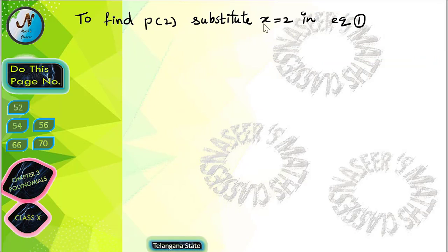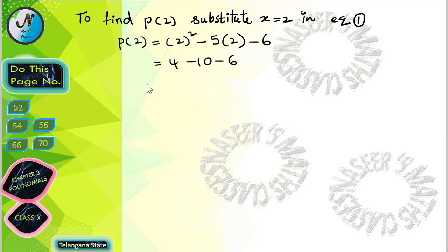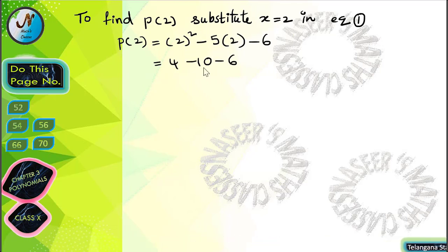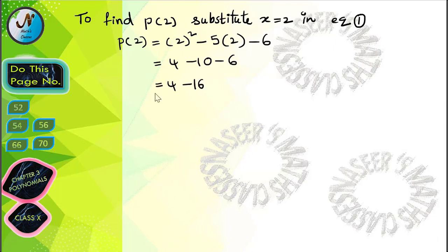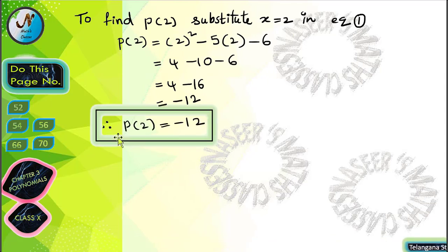To find the value of p(2), substitute x is equal to 2 in equation 1. Then we get p(2) is equal to 2 square minus 5 into 2 minus 6. After simplification, 2 square is 4, 5 into 2 is 10, so we get 4 minus 10 minus 6, which equals minus 12. Therefore, p(2) is equal to minus 12.